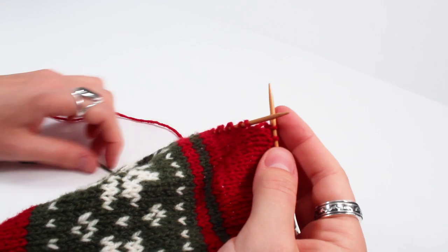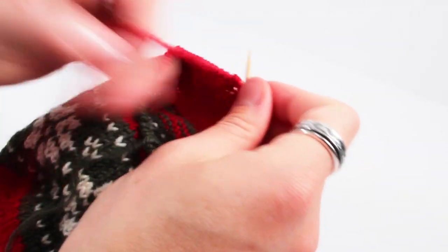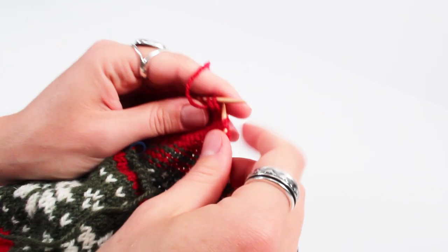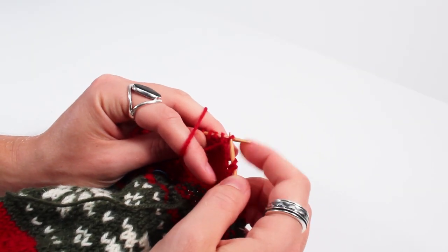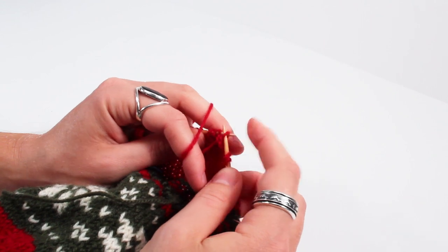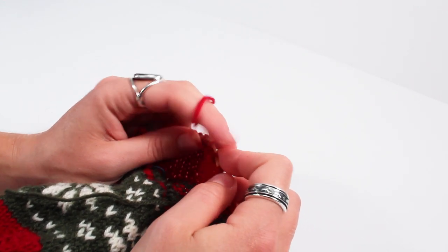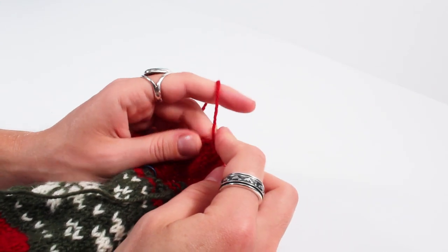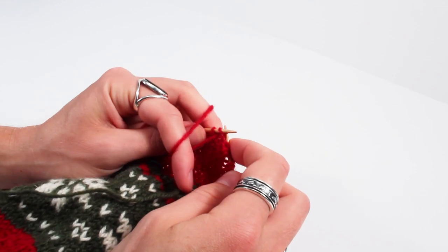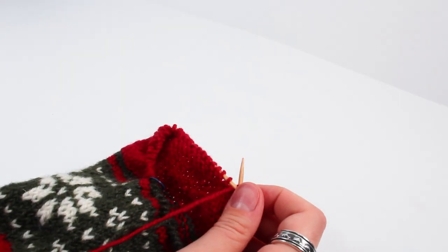And turn your work. Now we're not working any additional short row stitches so now you can just slip the first stitch. And on both sides you'll slip it purlwise. And then you'll purl back across until you have reached the next short row stitch.